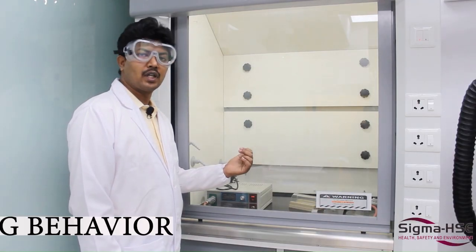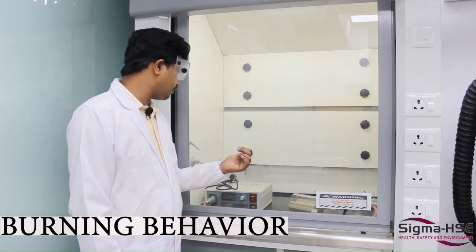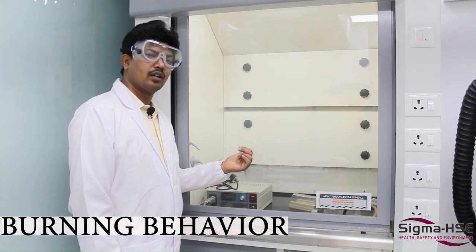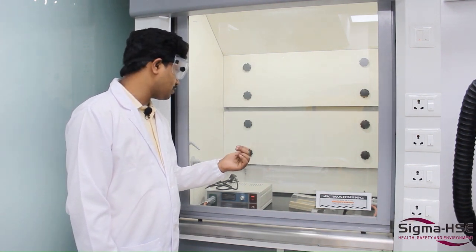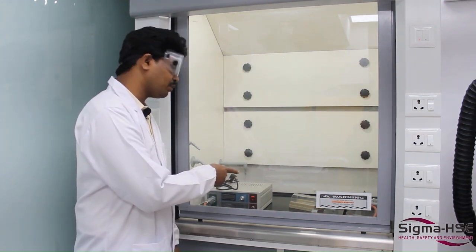This is the other equipment called as burning behavior. This particular equipment determines the fire propagation, flame propagation of the material when it comes into contact with ignition source. Here the ignition source is the platinum wire which gives around thousand degrees C.